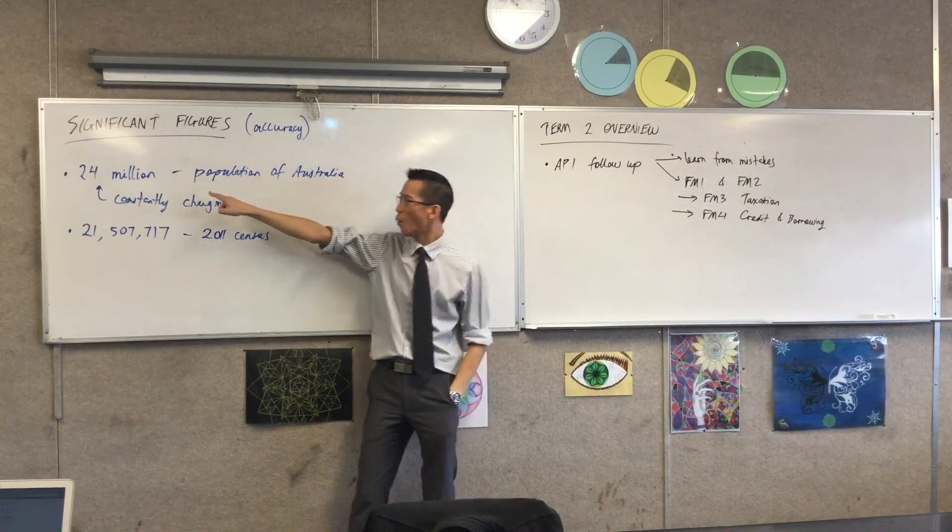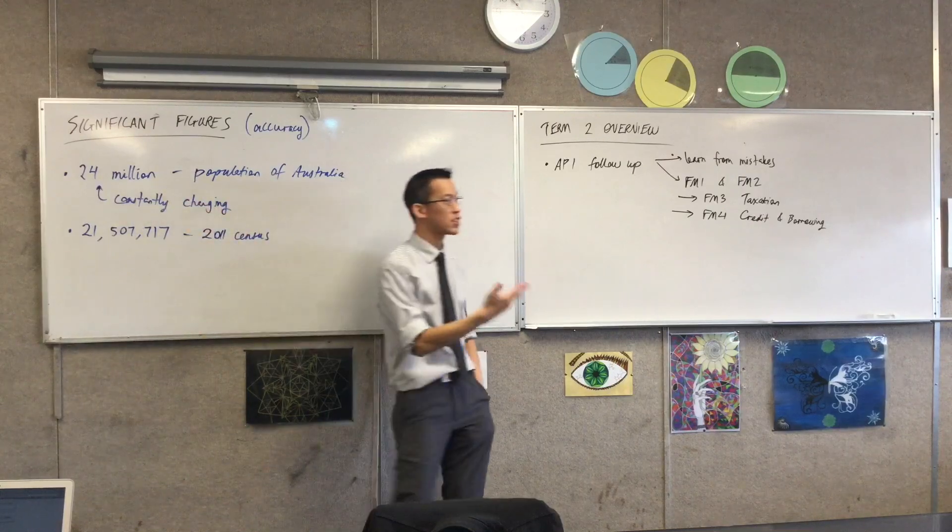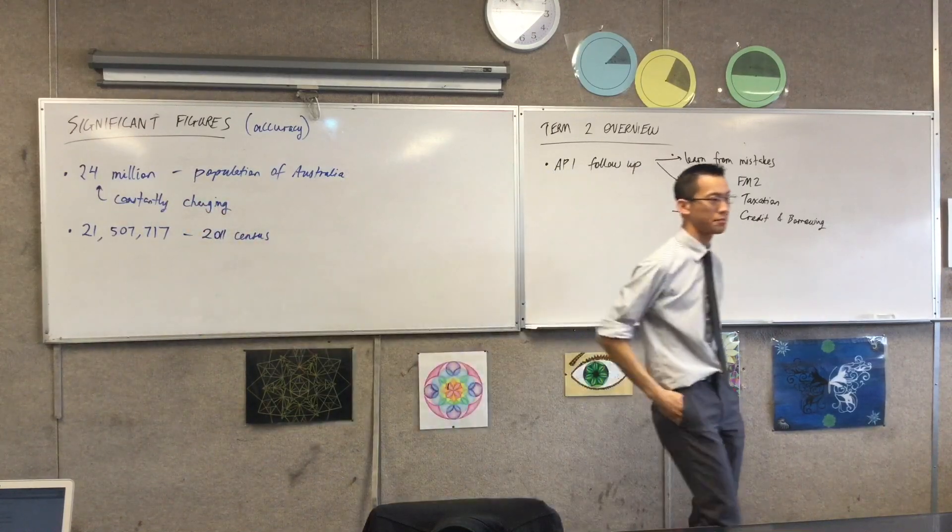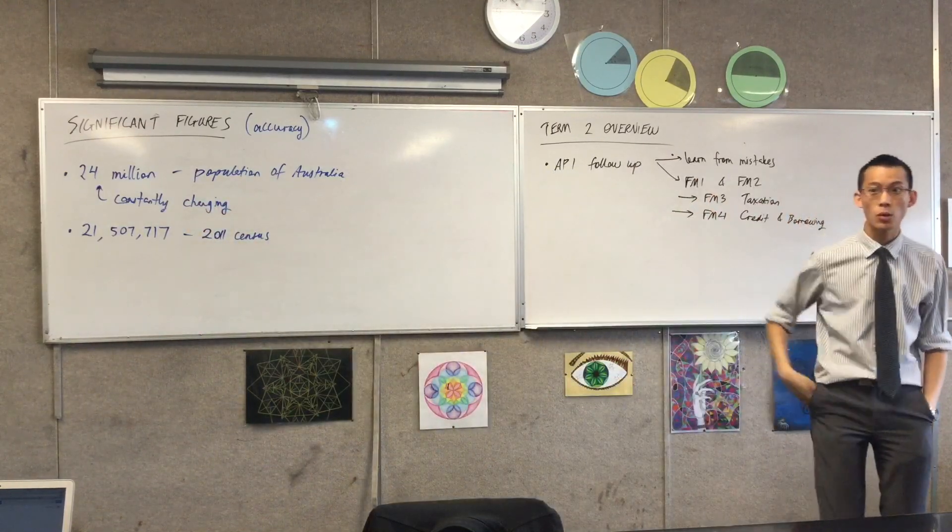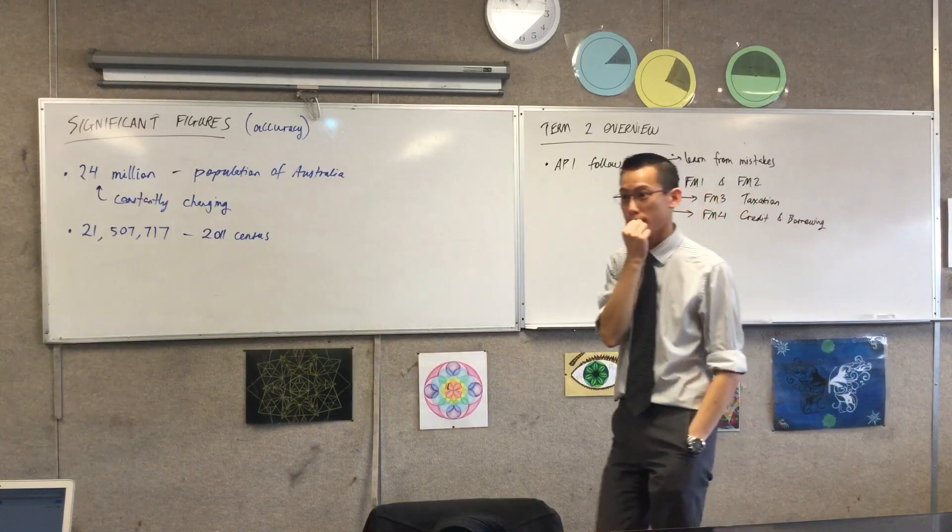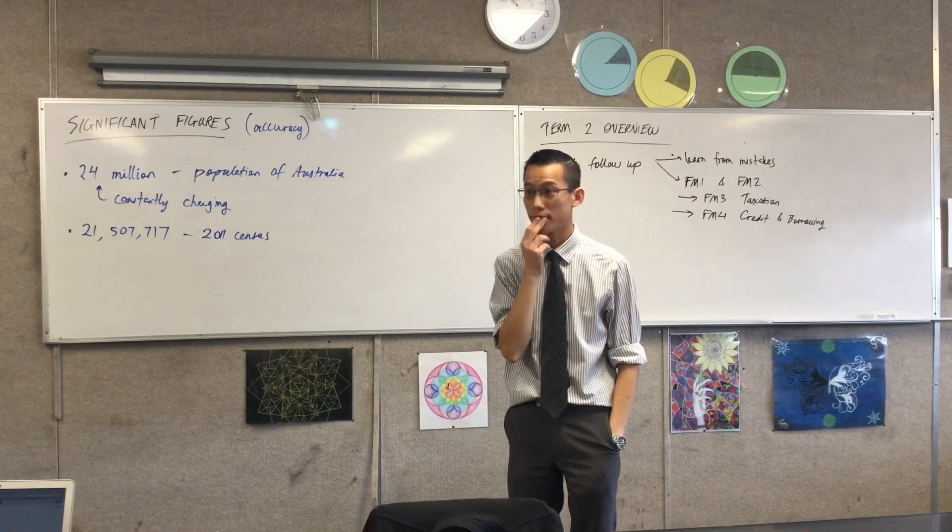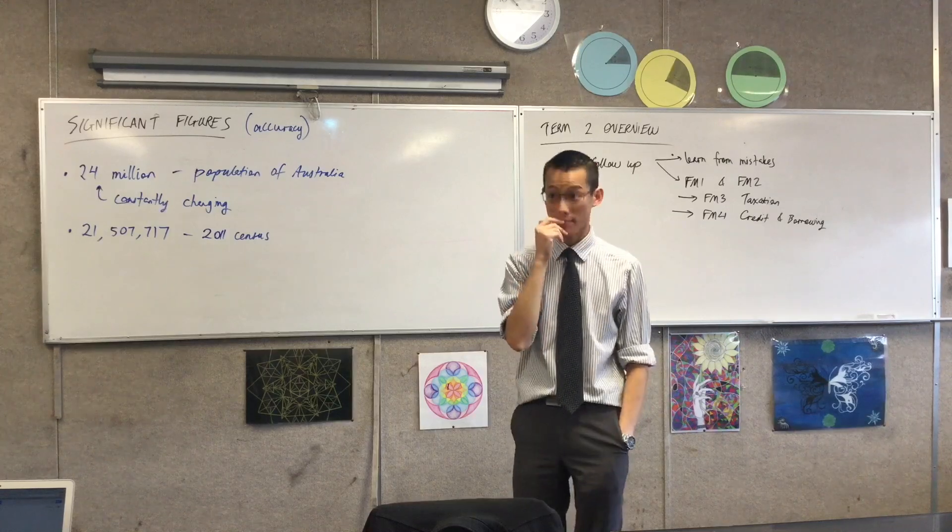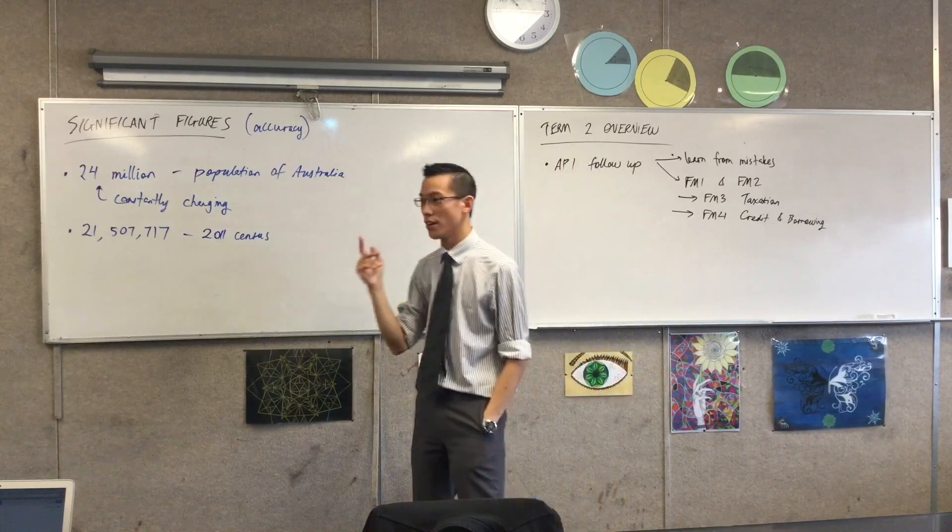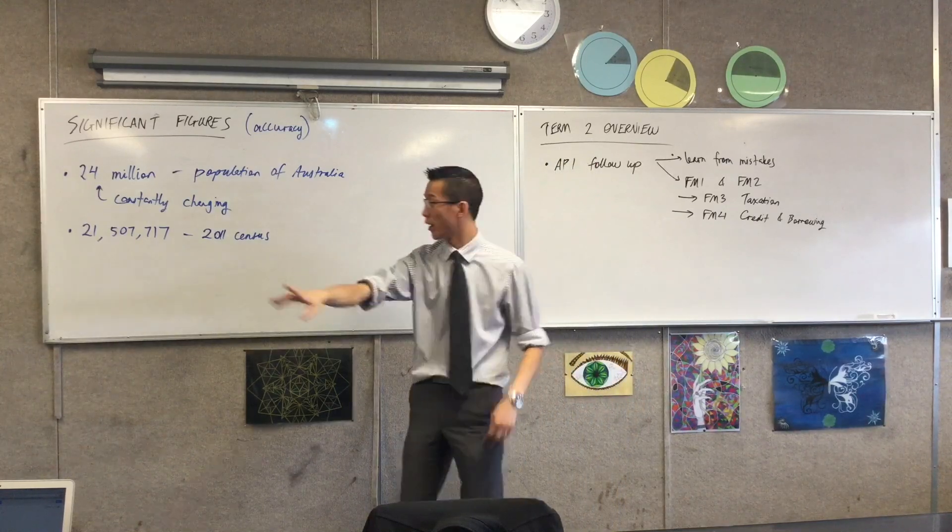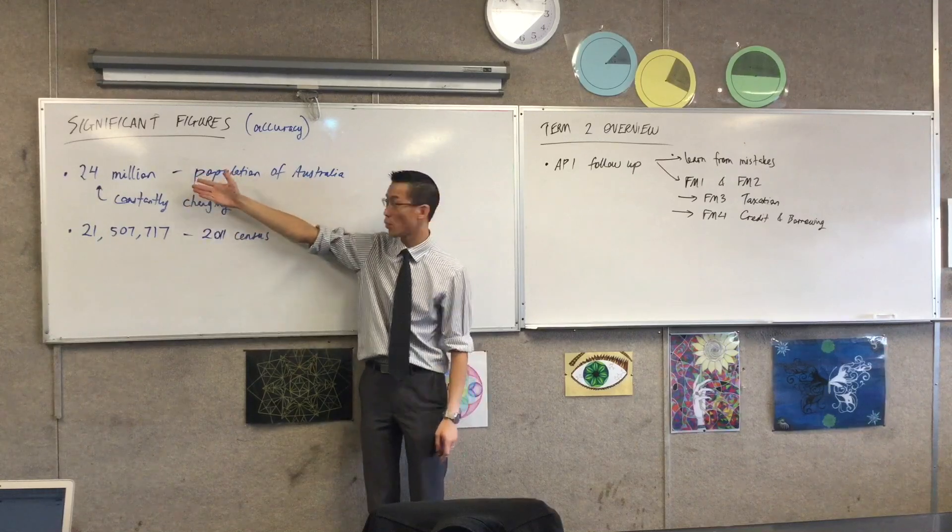This is actually a 2016 estimate. Where do you think this number comes from if it's not from a census? Any guesses? Every five years. Maybe they get an old census and they project how many they think. Yeah, very good.